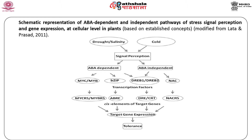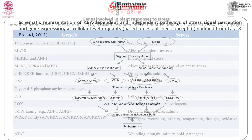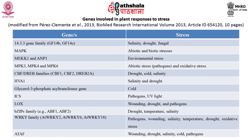Abiotic stress signal transduction may take place either by abscisic acid (ABA) dependent or independent pathways to regulate multiple stress-responsive genes. This schematic representation shows ABA-dependent and independent pathways of stress signal perception and gene expression at the cellular level. The ABA-dependent pathways are under the control of ABRE elements and bZIP transcription factors, whereas independent pathways are controlled by MYC and MYB family transcription factors.